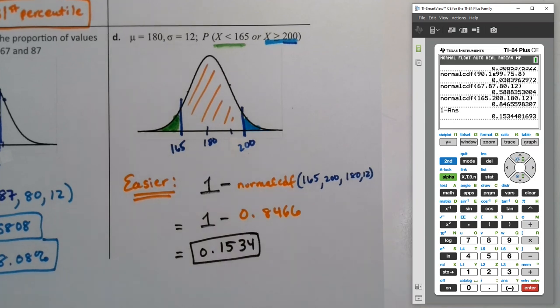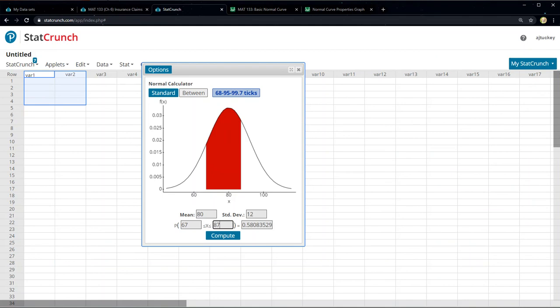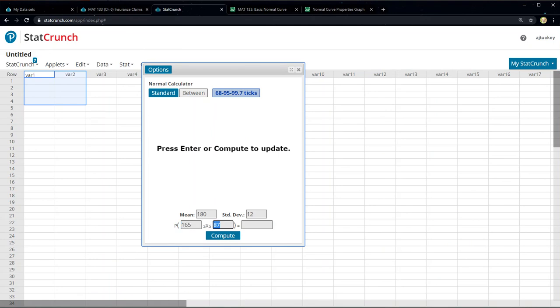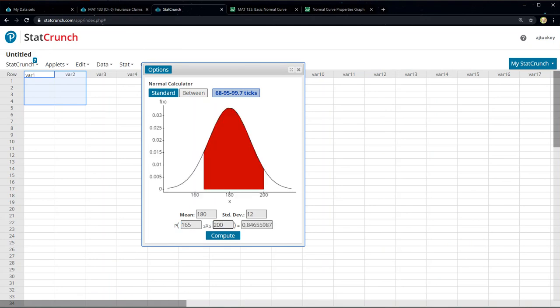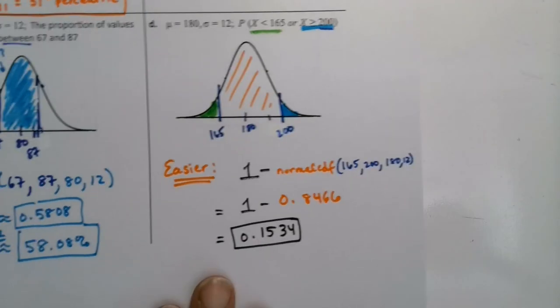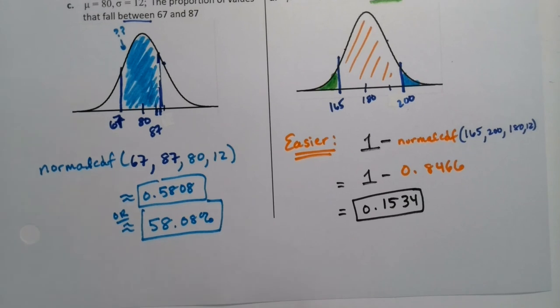Now if you use StatCrunch, you'd still have to do the same thing for that last step. Because StatCrunch will only get you the middle number. So if I say this is 180 and 12. And then I say this is 165 and this is 200. Enter. See there it gives me that central area of .8466. And then you still have to take it away from one. To be able to find the final results. Just like we did here. So you can find this number with StatCrunch or with the calculator. Your choice.